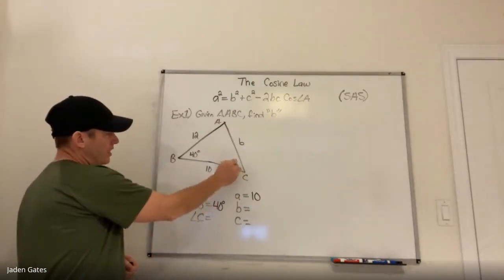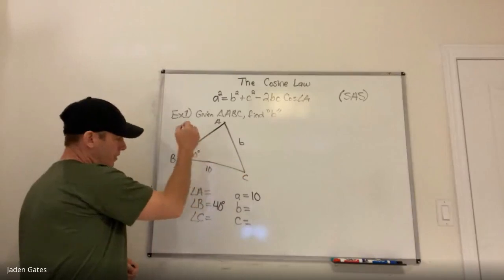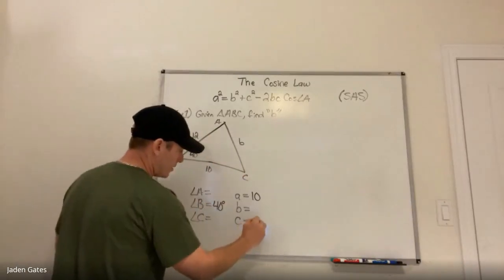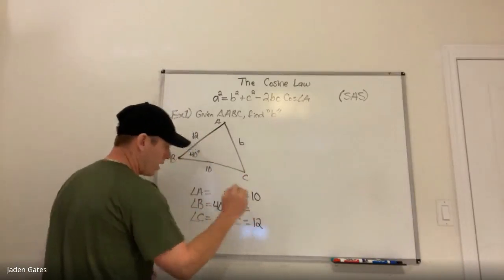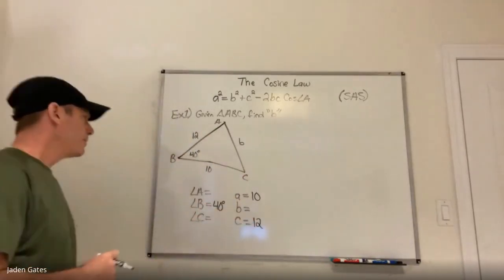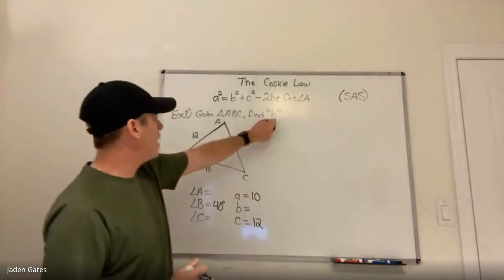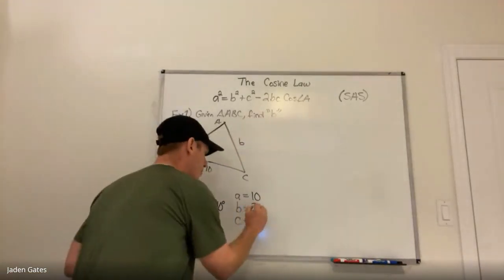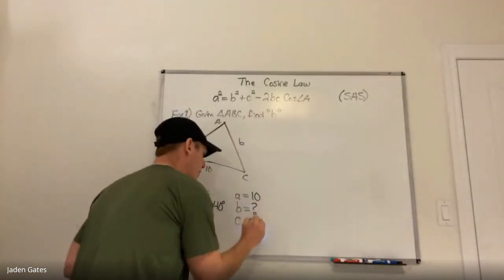There's angle C, and across from it is side c, so side c is 12. We are looking to find side b here, so that's our question mark.